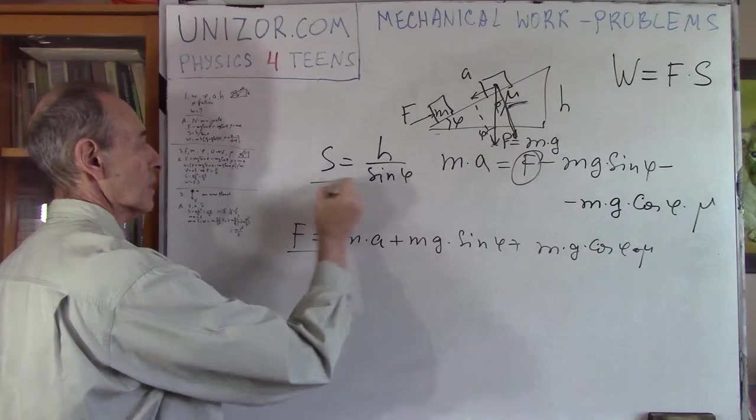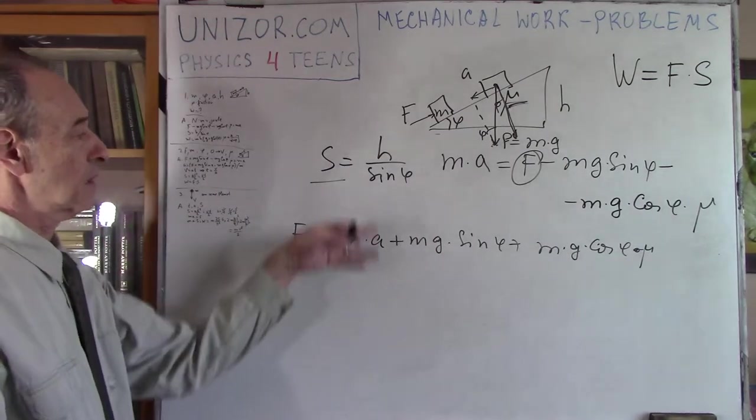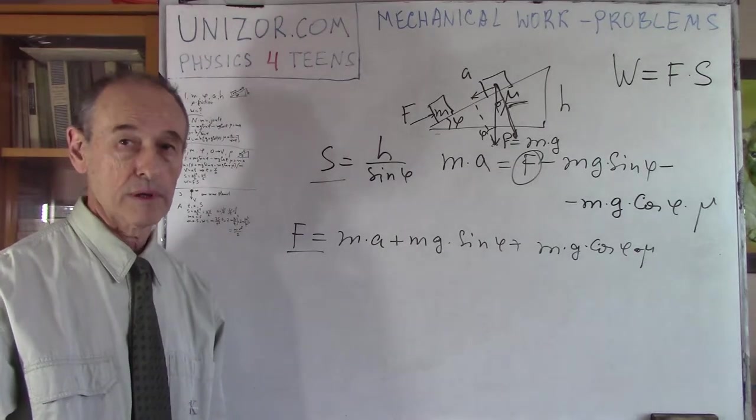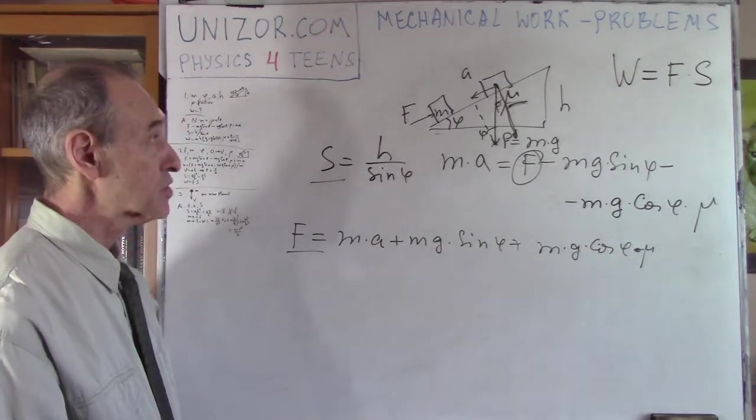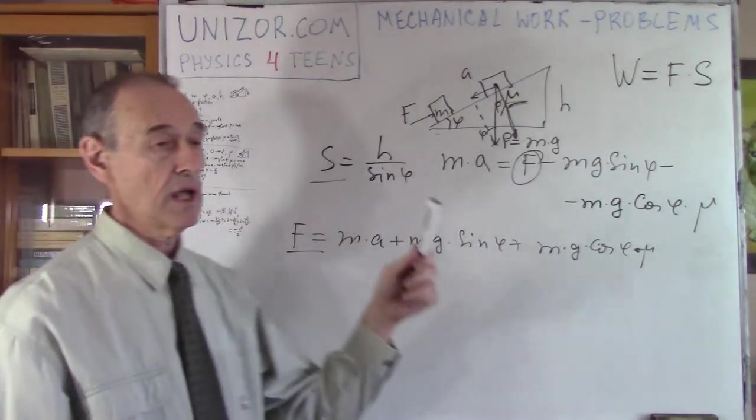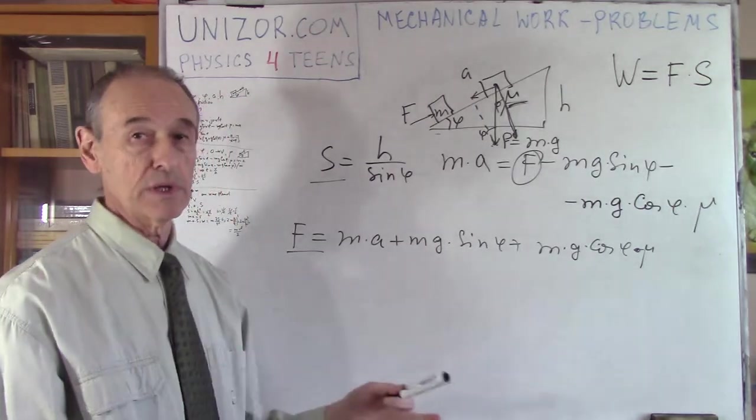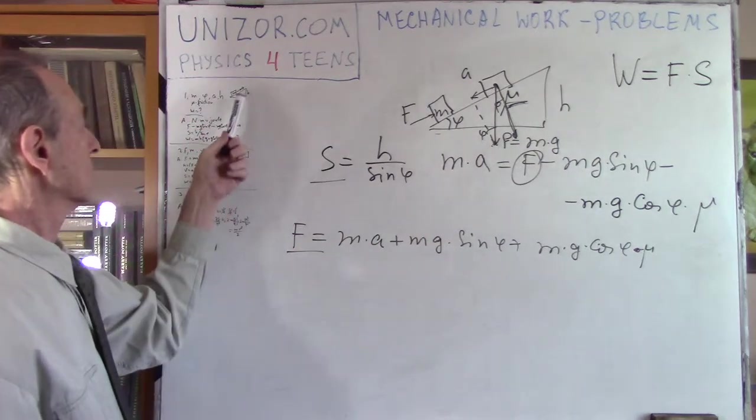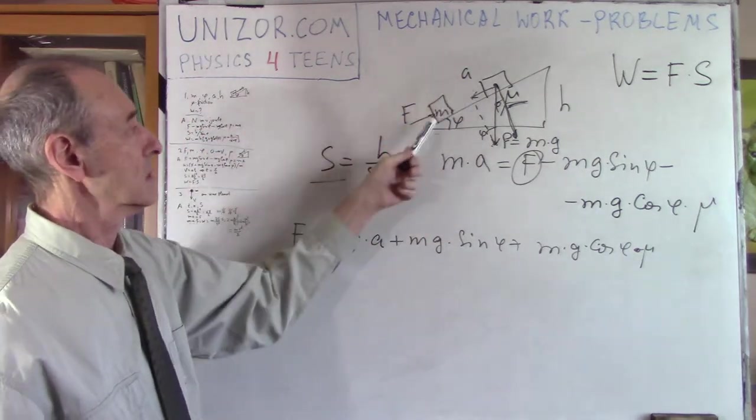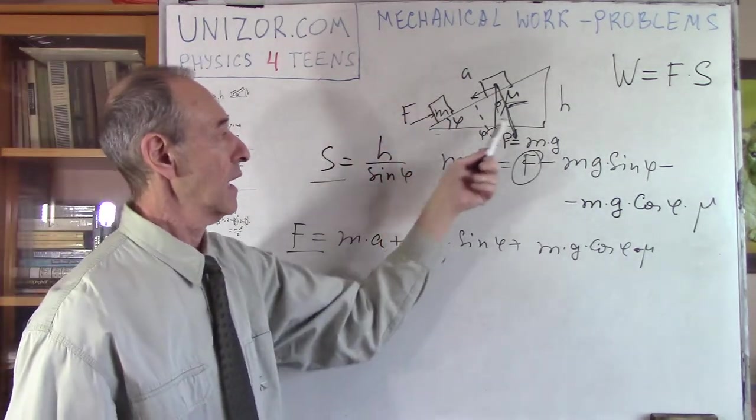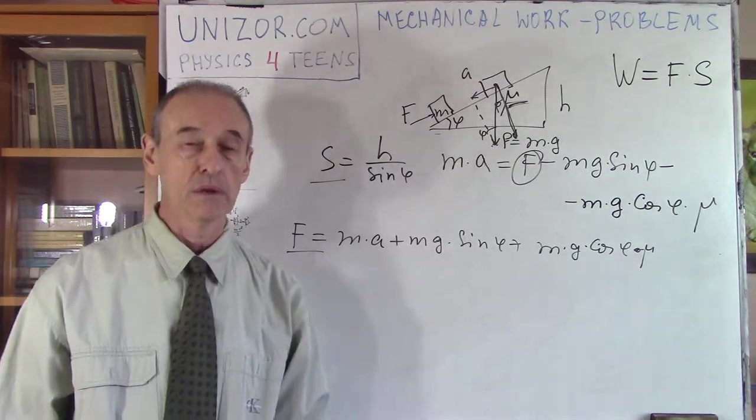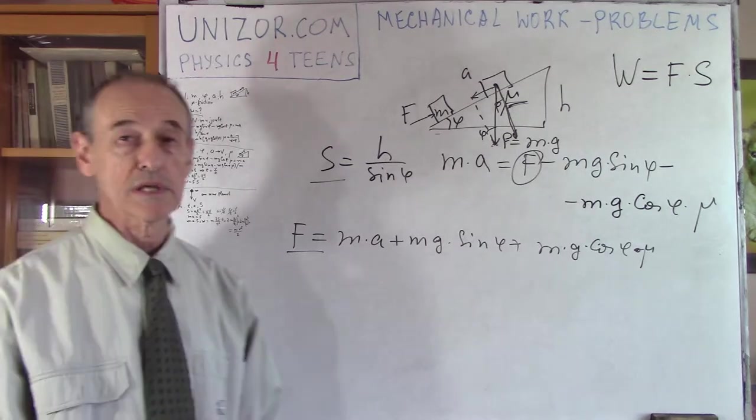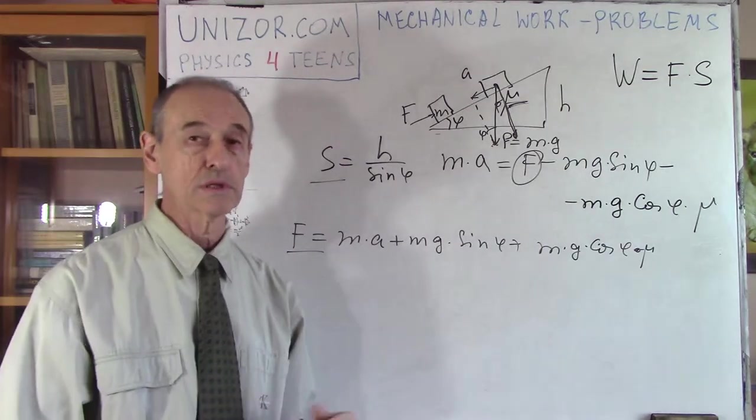F equals M times A plus M times G times sine phi plus M times G times cosine phi times mu. And knowing F and knowing S, multiplying them, we will get the work.